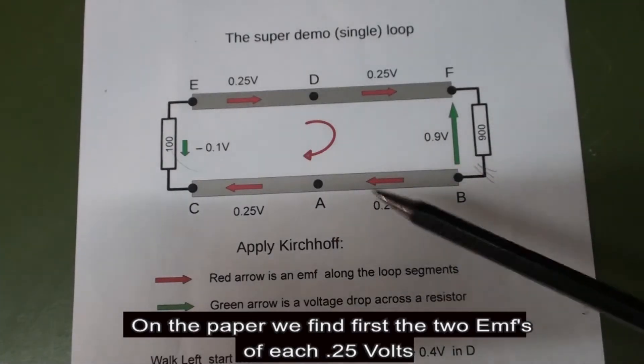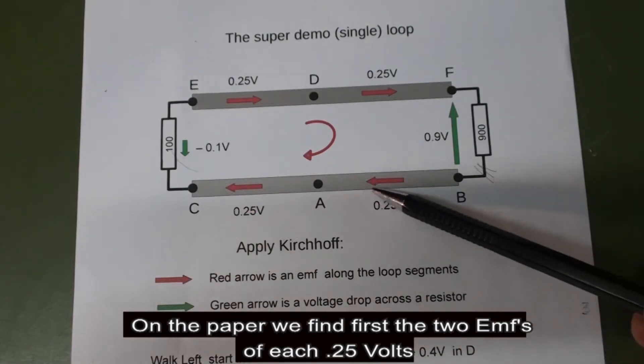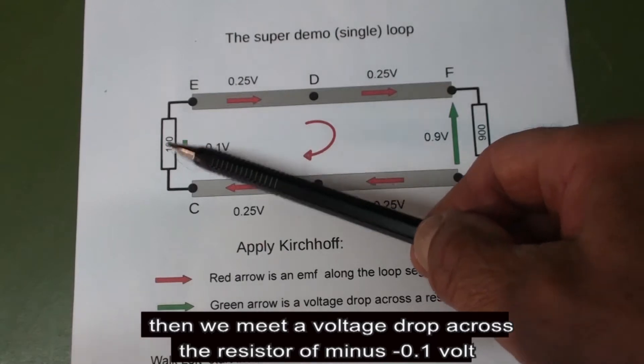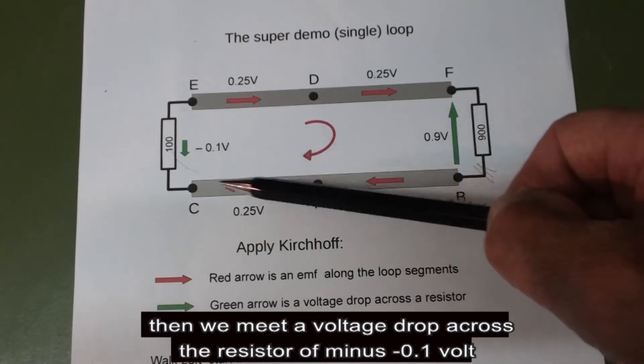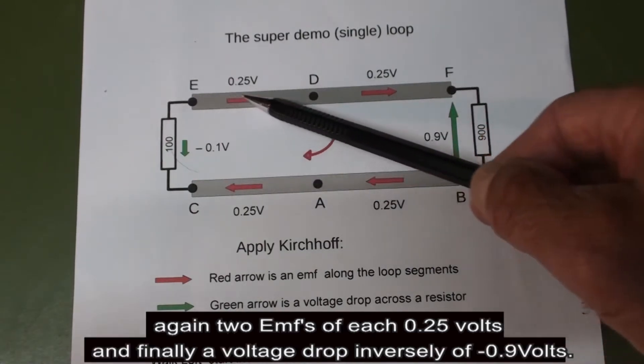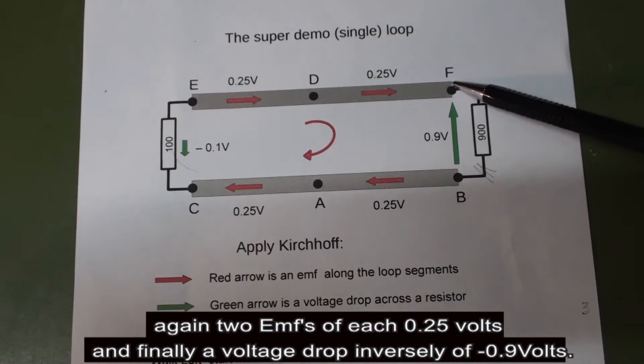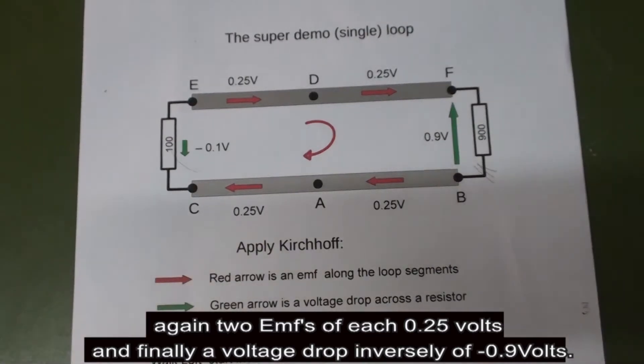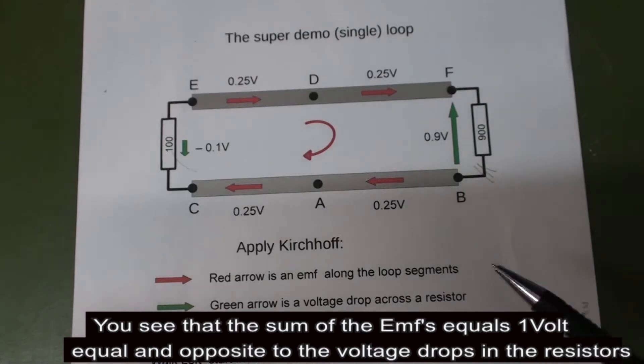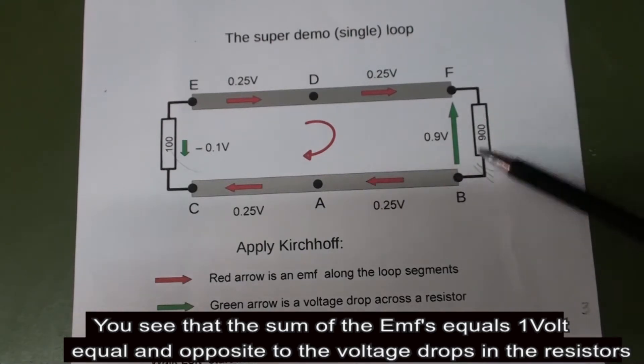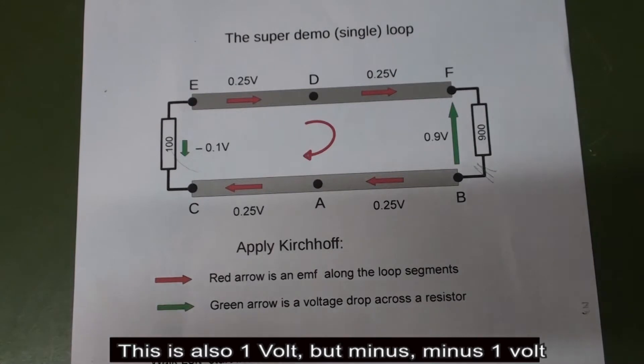On the paper we find first the two EMFs of each 0.25 volts, then we meet a voltage drop across the resistor of minus 0.1 volts. Again two EMFs of each 0.25 volts, and finally we have a voltage drop of minus 0.9 volts. We see that the sum of the EMFs equals 1 volt. It's equal and opposite to the voltage drop in the resistors, which is also 1 volt but minus.